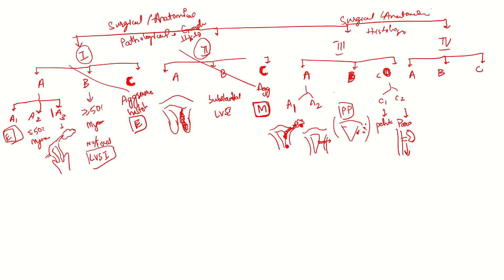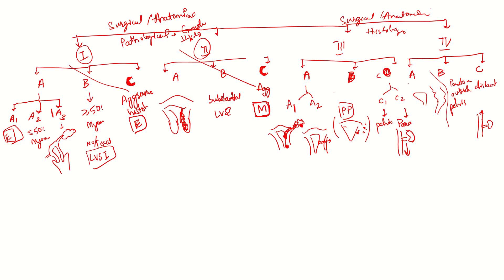Stage 4A is extension into adjacent hollow organs — anteriorly to the bladder or posteriorly to the rectum. Stage 4B involves peritoneum beyond the pelvis, such as omental deposits or anywhere else in the abdomen outside the pelvis. Stage 4C is distant metastasis — involvement of abdominal lymph nodes above the level of renal vessels, or involvement of bone, brain, liver, or lung metastasis.